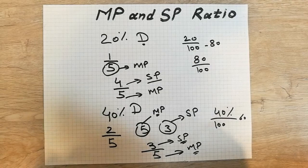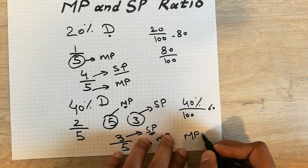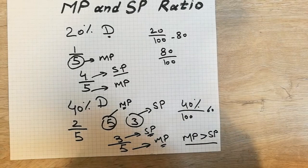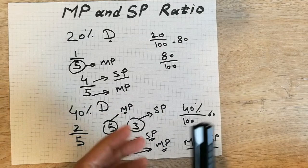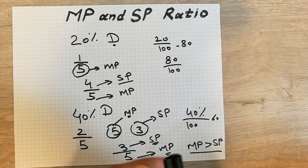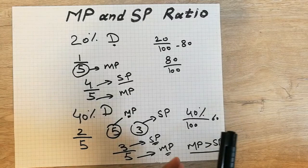One important rule: if there is a discount, mark price will always be bigger than selling price. Many students were asking about discount, mark price, selling price, the discount formula, and the MP to SP ratio, so I hope this video fully explains it. Please subscribe to my channel and like the video — thank you very much!